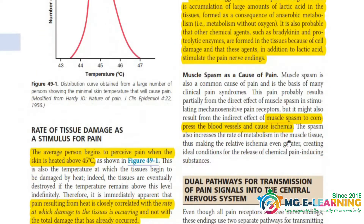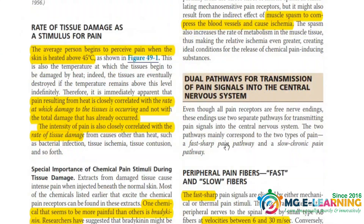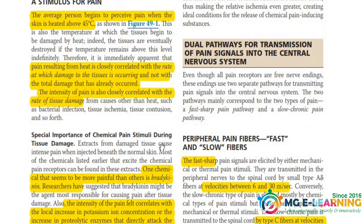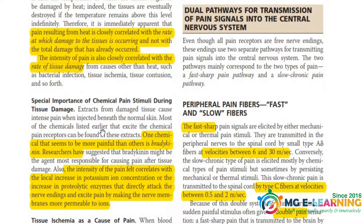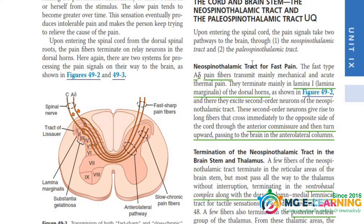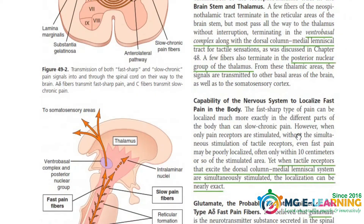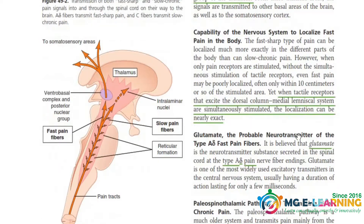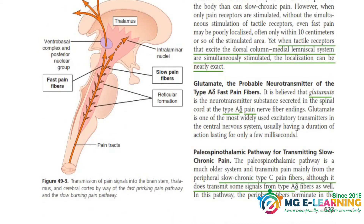On the next page, all the yellow highlighted points are important for conceptual purposes and for MCQs — you can read all of these. A very important UQ is the dual pain pathway in the cord and brainstem: the Neospinothalamic pathway and the Paleospinothalamic pathway. You should know their main differences. These are underlined in green.